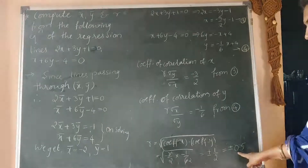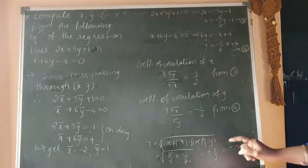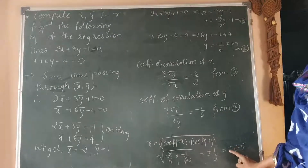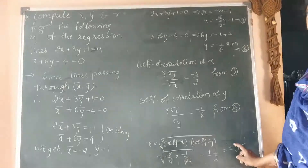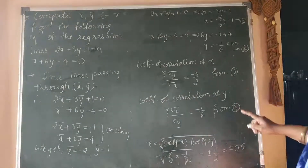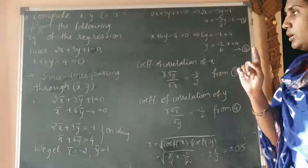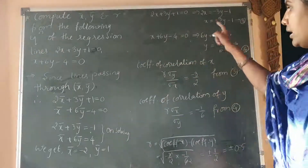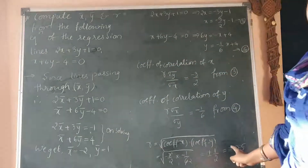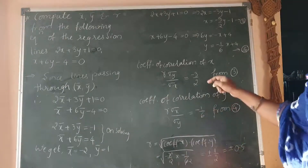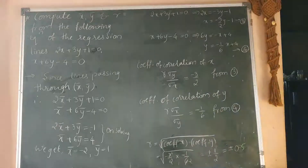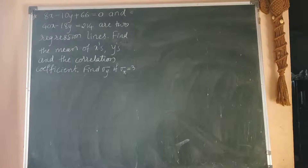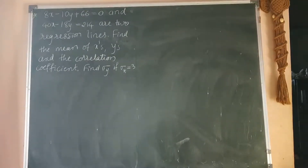We can see that 0.5 lies within the required limits, since r must satisfy minus 1 less than or equal to r less than or equal to plus 1. Therefore, r equals plus or minus 0.5 is our required answer and is correct. In case you obtain a value greater than 1, you need to rewrite the given equations and solve again until you get a value within the limits.